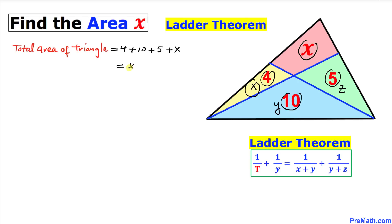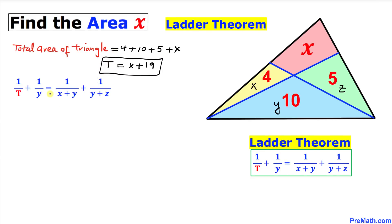Let me just go ahead and write down, I'm going to put down 4 plus 10 plus 5 plus x. Now let's go ahead and simplify that thing, that is going to give us x plus 19 and this is our total area of this triangle. Here's our Ladder formula, let's go ahead and fill in the blanks. One over T, in our case we figured out T is x plus 19.